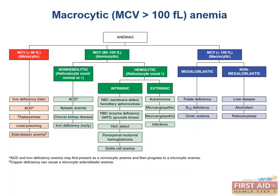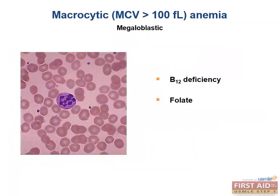If DNA synthesis is not keeping up with cell growth, then cells will grow more between each cell division. When these blood cells make it to circulation, they will be fewer in number, larger in size, and less mature. The two major causes of macrocytic anemia are vitamin B12 and folate deficiency.